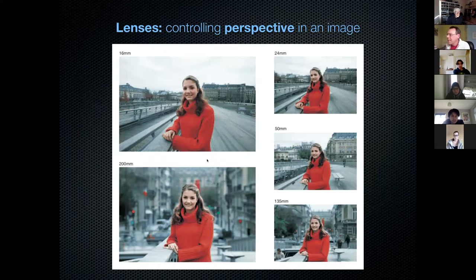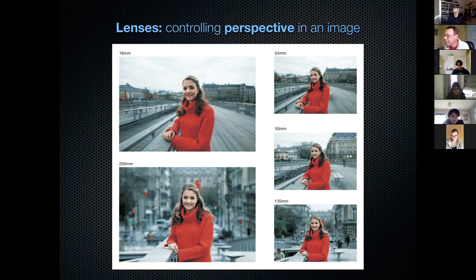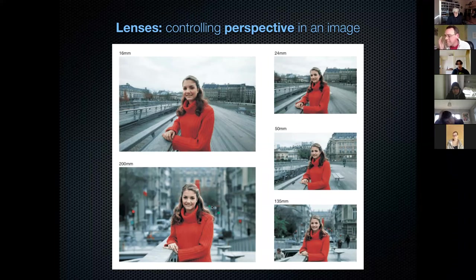These photographs have all been taken with the photographer and model in the same position, but the lenses have changed. With a very wide angle 16mm lens, it looks like the buildings behind the girl are a long way away and there's a lot of exaggeration in perspective. With our naked eye we'd probably see what the 50mm lens sees. With a 200mm lens, the buildings appear very close behind the girl. This is one way photography can tell lies — it can make people seem like they're standing next to each other when there's actually some distance between them. If you want to flatter people, use a slightly longer lens — it makes noses and ears look a bit smaller. A wide angle lens close up makes noses look large.